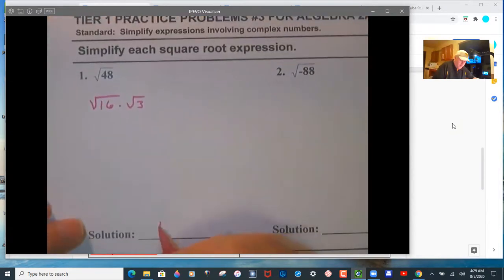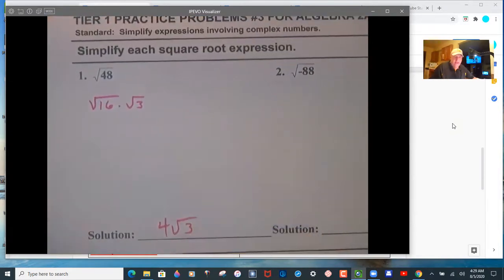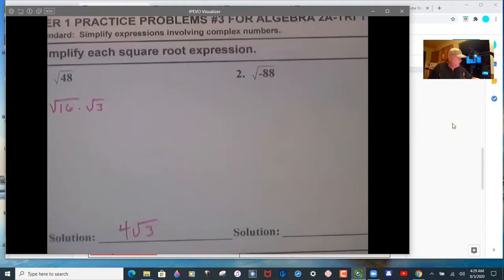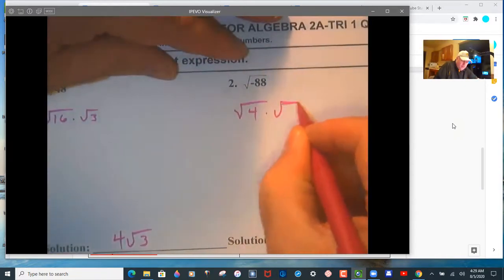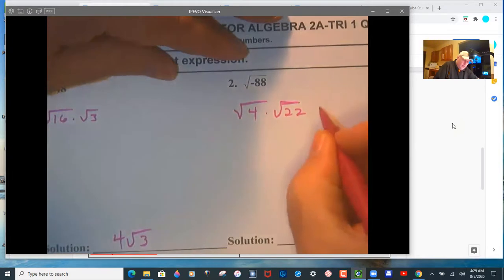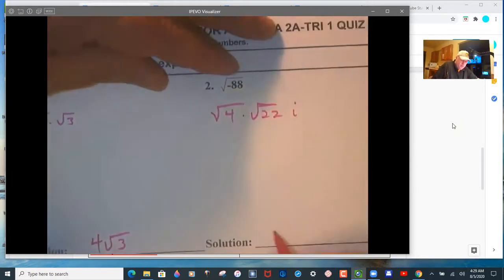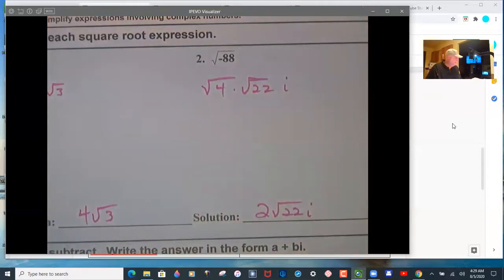Largest perfect square that goes in there. I don't put i down because it's not negative 48. The largest perfect square that goes in here is 4.